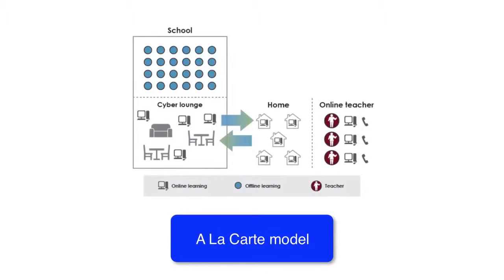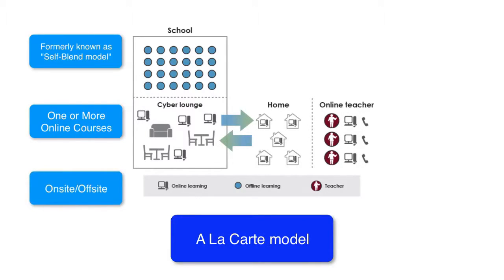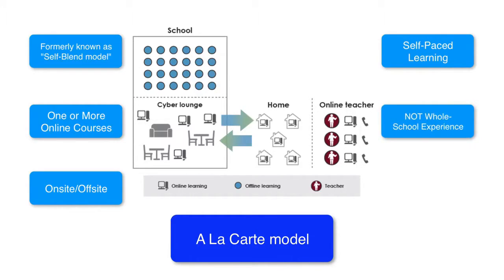And the a la carte model. Here is a diagram of the a la carte model. This is based on how the Quakertown Community School District implements the a la carte model in their curriculum. More about their blended learning profile is on the Clayton Christensen Institute website. This blended model was formerly known as a self-blend model. In the a la carte model, students will take one or more online courses. Courses are both on-site at school and off-site outside of school. There is a huge element of self-paced learning. Keep in mind that this is not a whole school experience, which makes it different from the enriched virtual model.